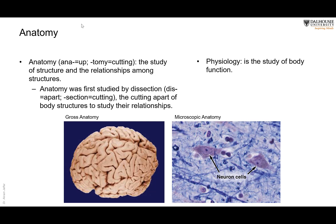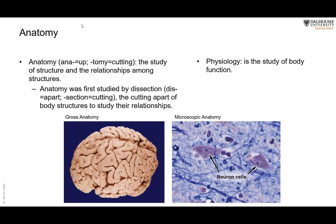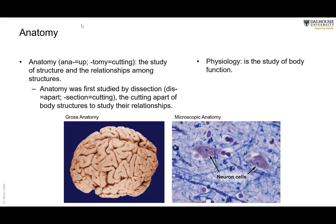Anatomy is studied either by the naked eye — this is gross anatomy, or macroscopic anatomy — or you can study the structure through a microscope, like a light microscope or electron microscope. This is microscopic anatomy, and the other term for it is histology. Histology is part of this course, as well as the gross anatomy.